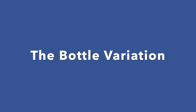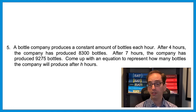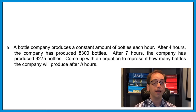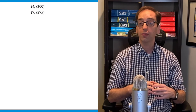Let's kick it up a notch with a harder version where they don't tell you the rate of change. A bottle company produces a constant amount of bottles each hour. After four hours the company has produced 8,300 bottles; after seven hours, 9,275 bottles. Come up with an equation to represent how many bottles the company will produce after h hours. Since it's a constant amount each hour, it's linear. We can treat the data as coordinates: (4, 8300) and (7, 9275). Finding the rate of change means finding the slope.